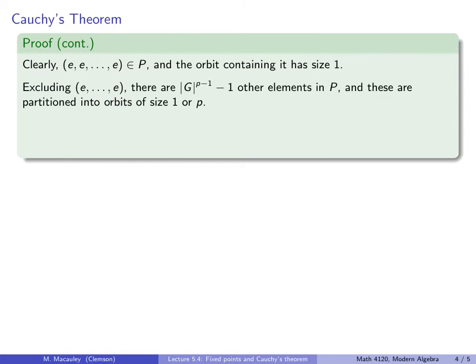Now, what do we know about this number? Well, so p divides the order of G. So this number here, |G|^(p-1), is a multiple of p. Right?